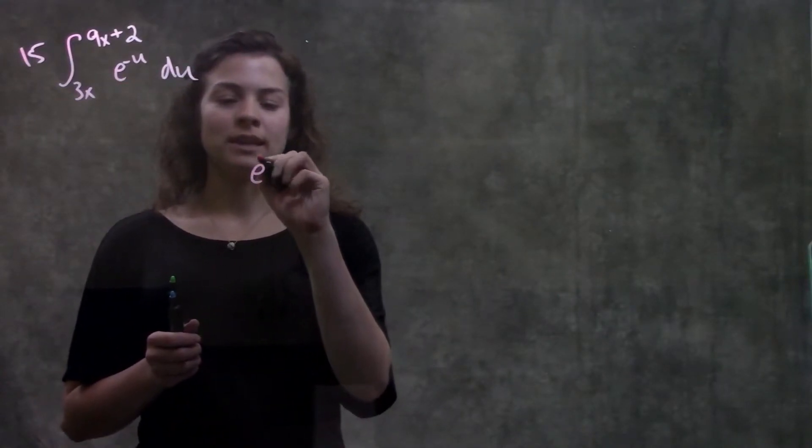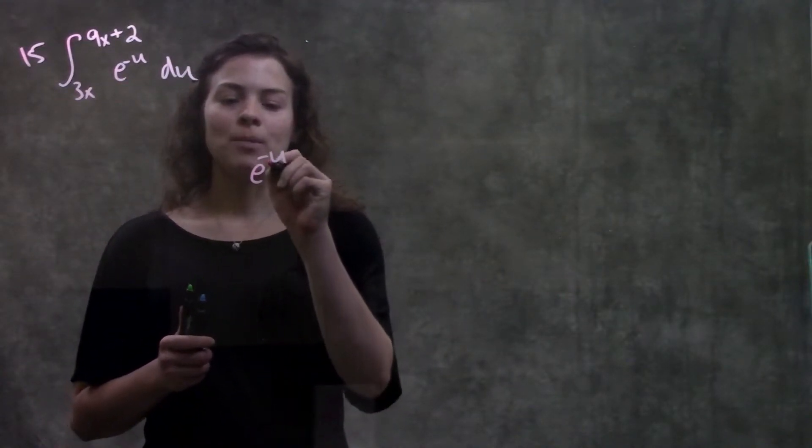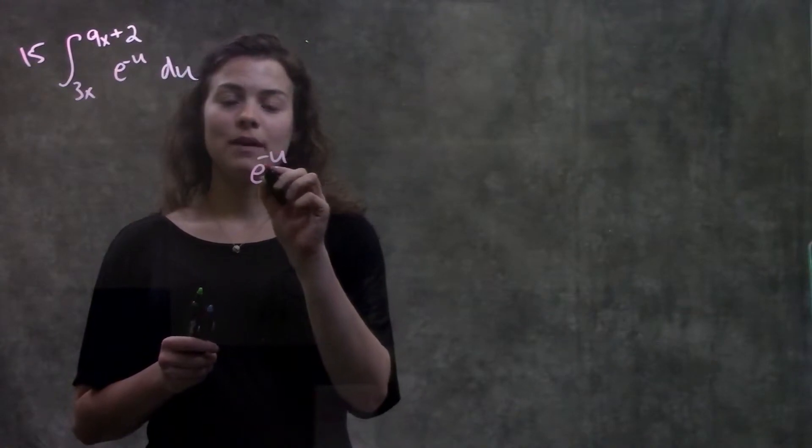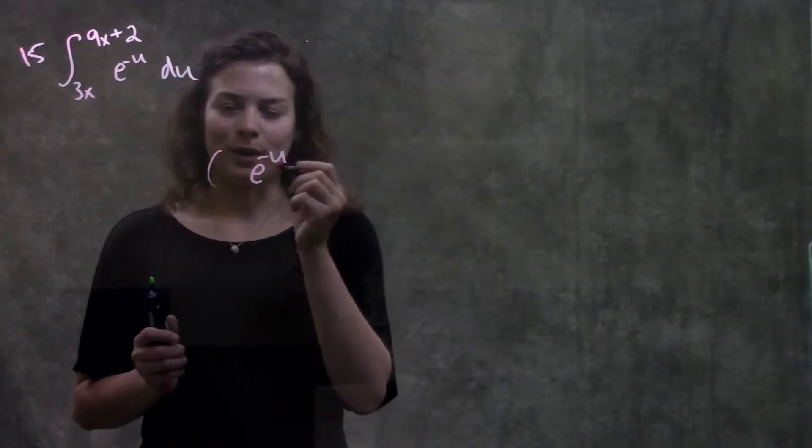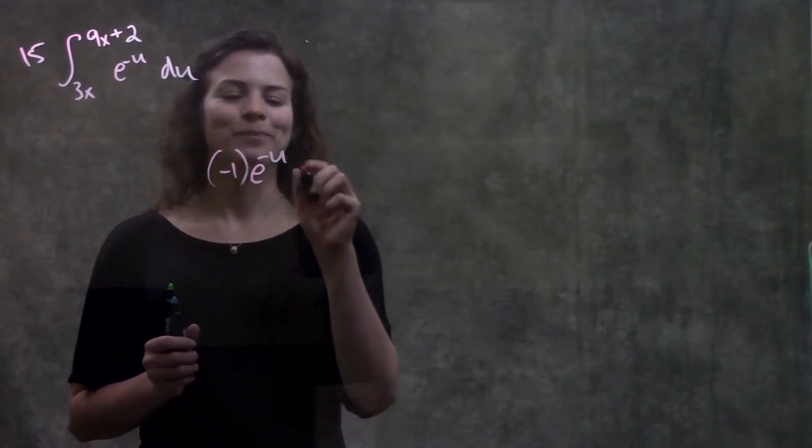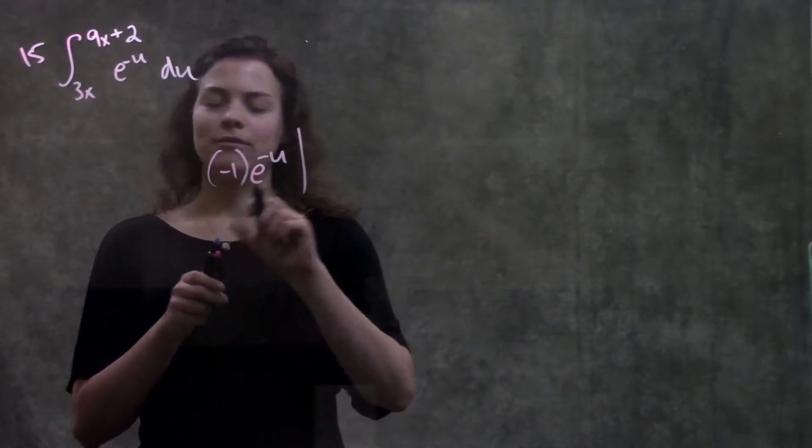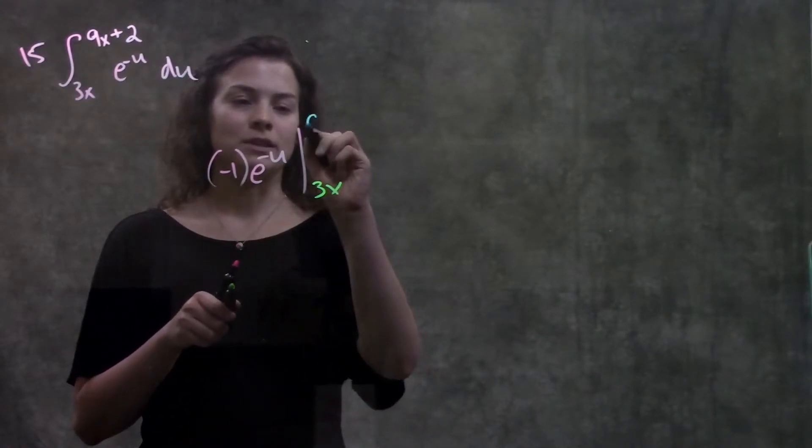The integral of e to the x is just e to that same x. Remember, we multiply by the reciprocal of this coefficient. The reciprocal of negative 1 is just negative 1 over 1, or negative 1. And they're asking from 3x to 9x plus 2.